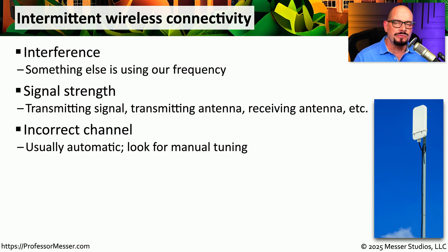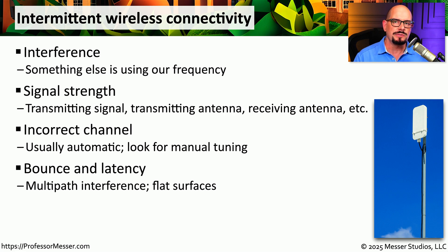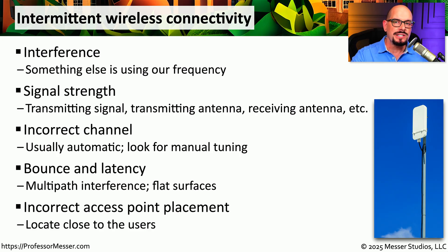You're also able to set the channel manually on your access point, which might be a good way to try different frequencies to see which one works best. Some access points have problems receiving multiple signals that have bounced off of things around us — we refer to this as multipath interference. Sometimes flat surfaces can cause problems, and sometimes the access point is simply too far away. By moving it to a centralized area, you effectively increase signal strength for everyone.